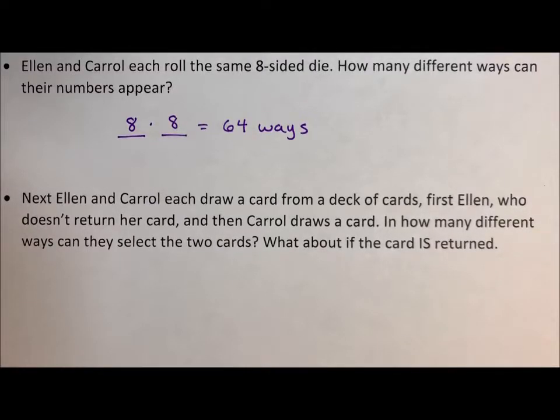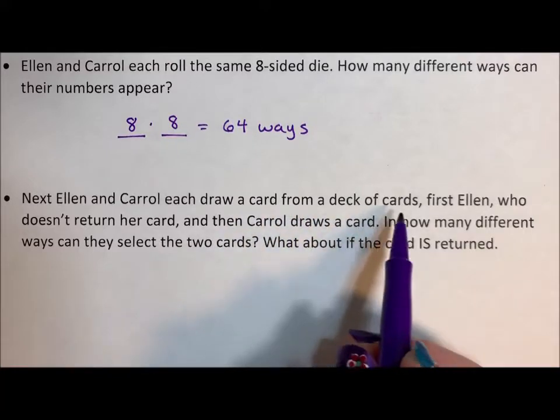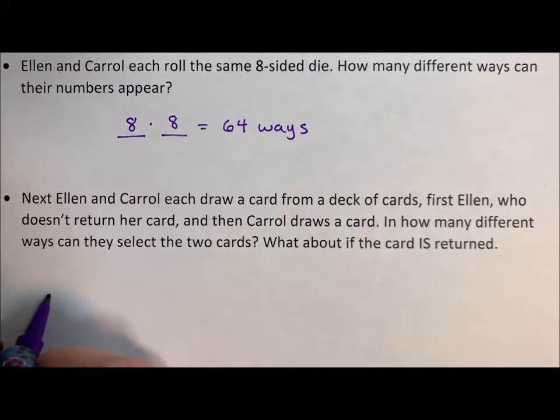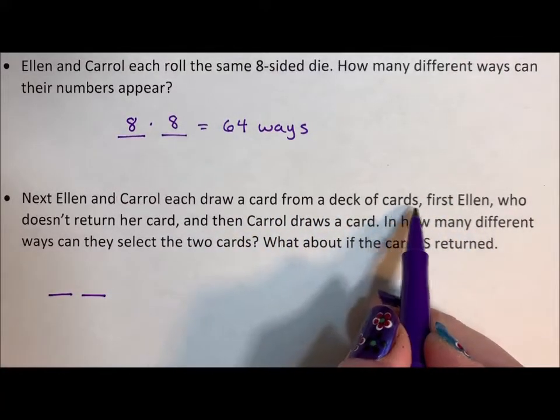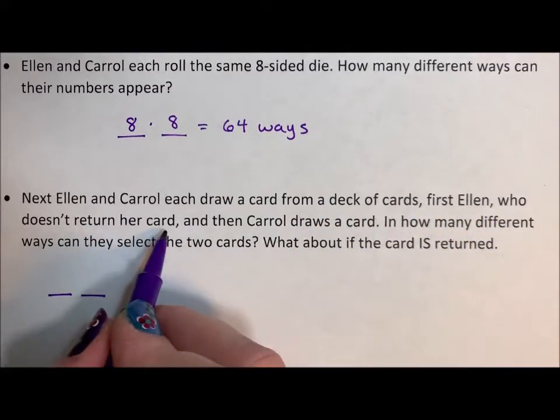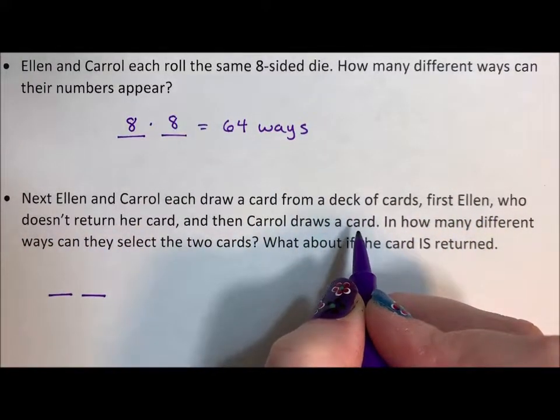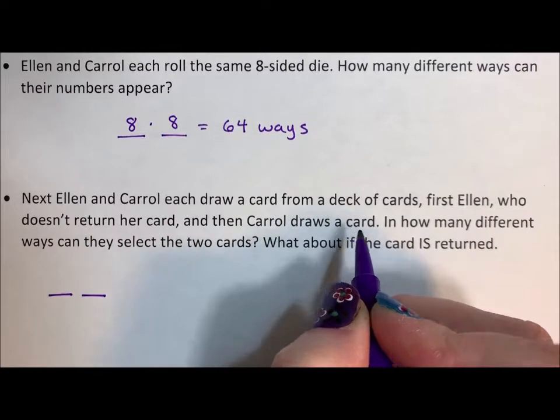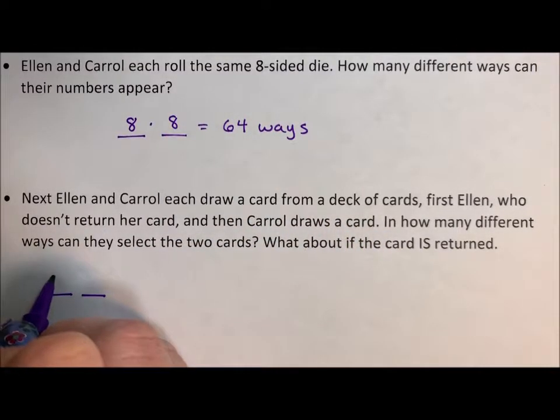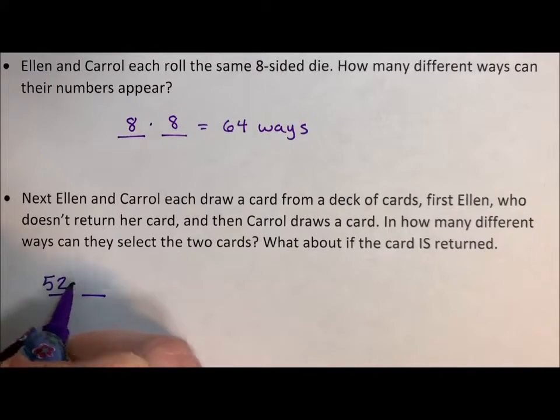All right, next, Ellen and Carol each draw a card from a deck of cards. First, Ellen, who doesn't return her card. This is a standard deck with 52 cards, so Ellen has 52 cards from which to choose.